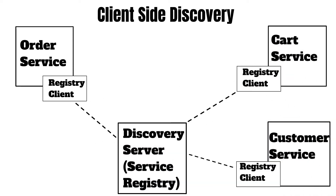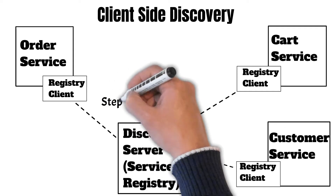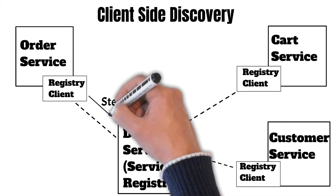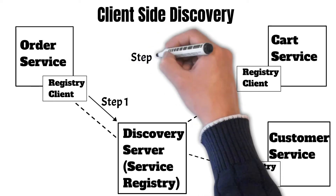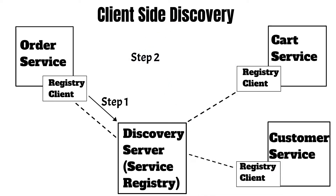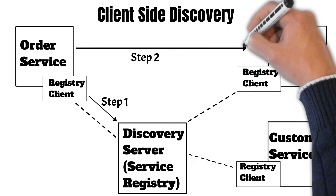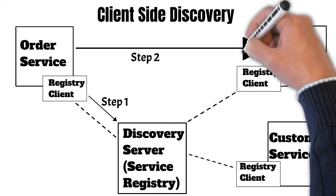Now, if the order service wants to call the card service, as part of step one, it will call the discovery server. After calling the discovery server, it will have the IP address of the card service. Then, as part of step two, it will be able to actually call the card service after having its address. This was client-side discovery.